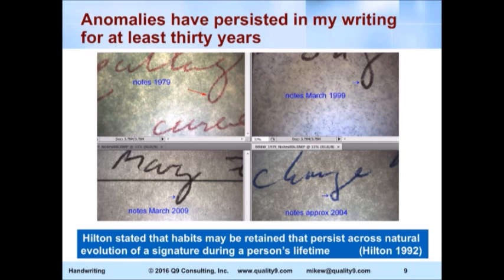We can look at what I'm calling micro-anomalies, or little features of writing, such as what we call ink blobs and goops and so on. This is an example of my writing from 1979 to 2009. Whenever I write a lowercase y or j or something of that nature, there is always a little blob of ink right there.